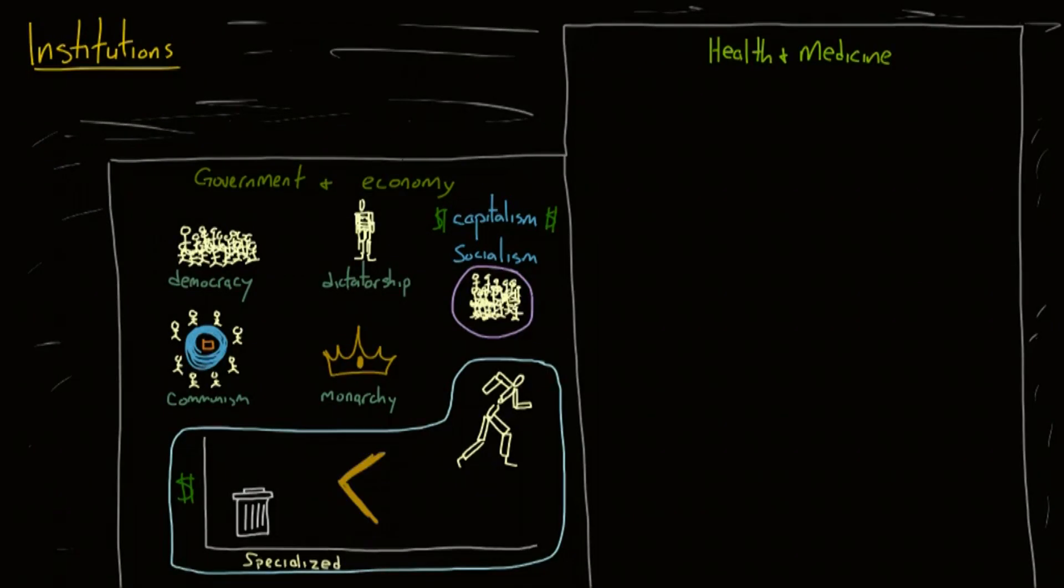Healthcare and medicine is the final institution we will examine here. We know medicine exists to keep people healthy, but it also has other effects on society. Medicalization, for example, occurs when human conditions get defined and treated as medical conditions and become the subject of medical study, diagnosis and treatment. This often occurs with mental health type issues like sadness and attention, but also can occur with physical issues like birth.